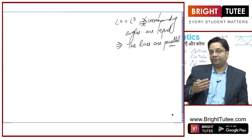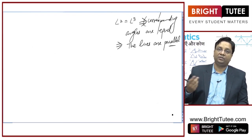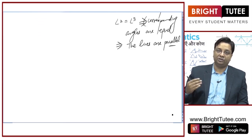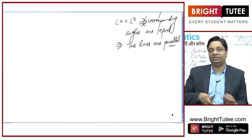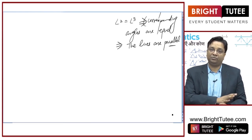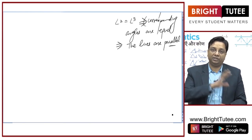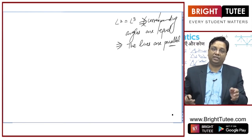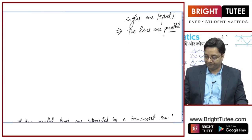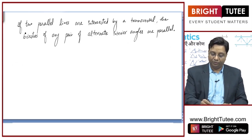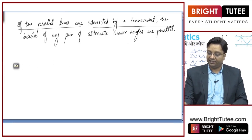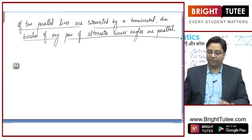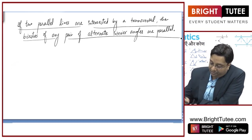An axiom is something that we assume to be true — we do not have to prove it. It is an assumed fact. So you start with the fact that the corresponding angles axiom is true, and based on that you prove the theorems. If two parallel lines are intersected by a transversal, the bisectors of any pair of alternate interior angles are parallel.